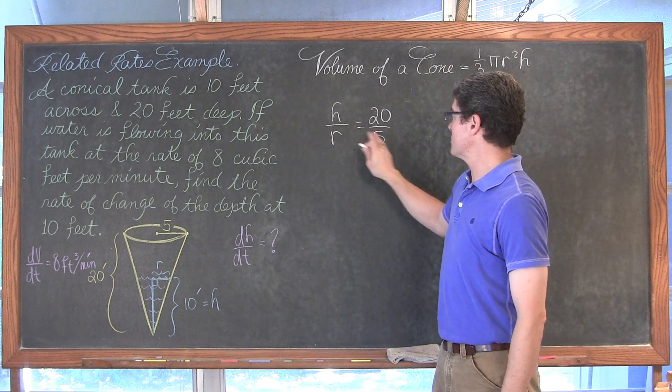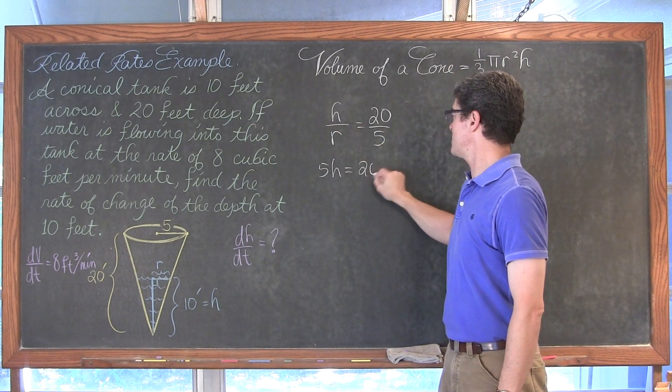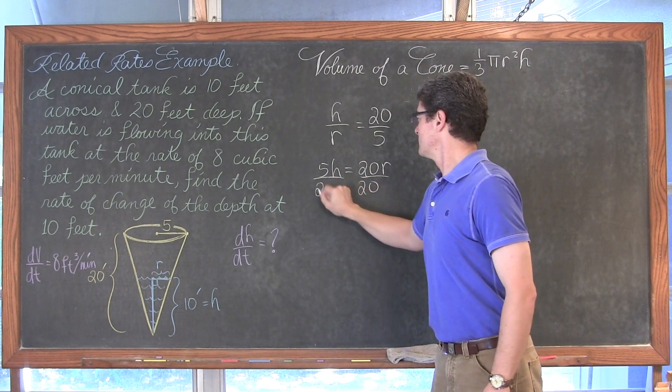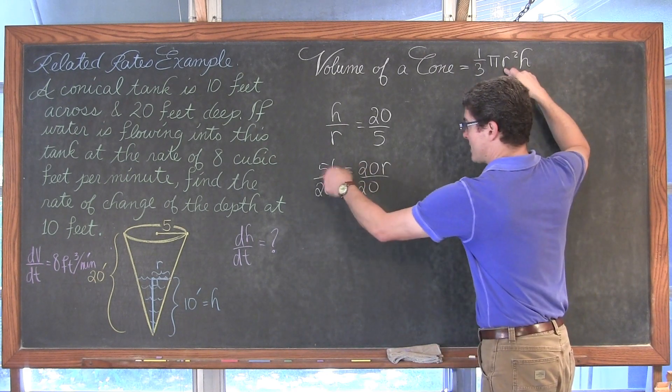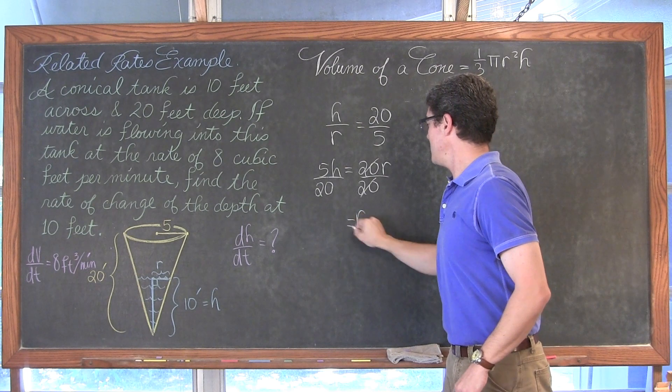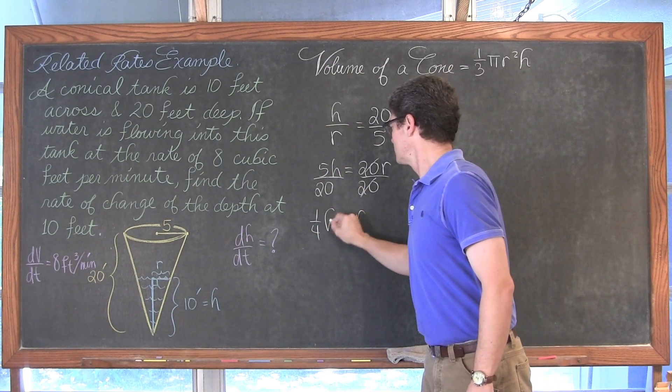If I solve this for r, if we cross multiply we have 5h is equal to 20r. Divide both sides by 20. Trying to solve for r so I can take the r out and plug in some kind of expression that just has an h in it. And so we have r is equal to 5 over 20 is 1 fourth.